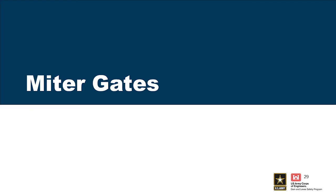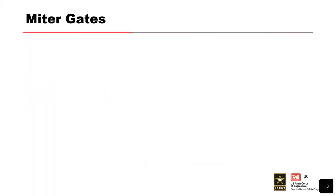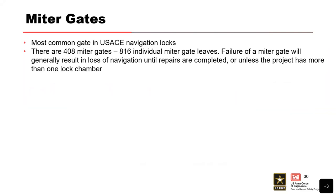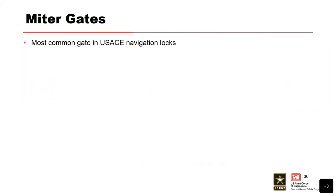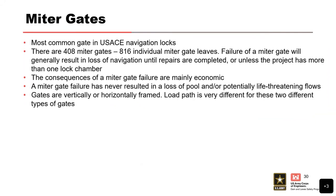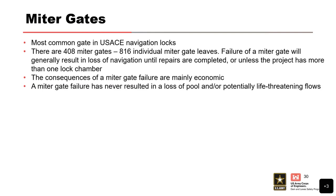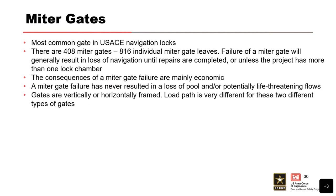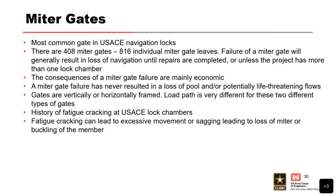Moving on to miter gates, which are common in USACE navigation projects — one of our more common gates that we are still designing today because they just work. We have 408 miter gate sets, or 816 individual miter gate leaves. The consequences are mainly associated with loss of service and replacing the gate — loss of service of that particular lock chamber. The gates can be framed in different configurations: not all are horizontally framed, some can be vertically framed. If you have a wide chamber and the gate is relatively short, vertically framed members can be slightly more economical.